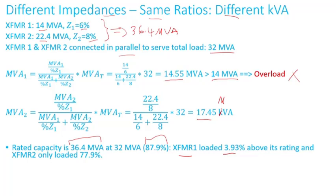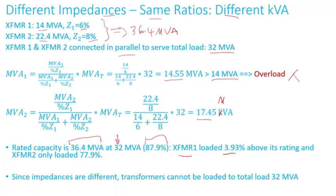In other words, if this load goes up even more, transformer one will be overloaded even more. Since the impedances are different, these transformers cannot be loaded to 32 MVA — otherwise you're going to damage transformer one if it sustains that overload for a long period of time.